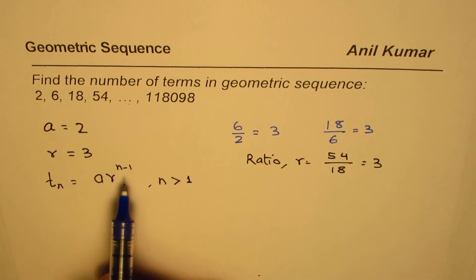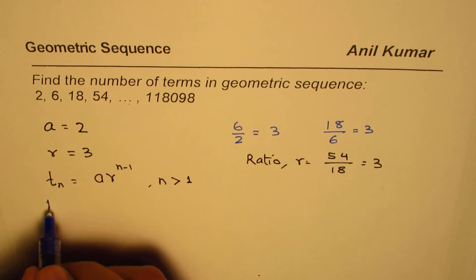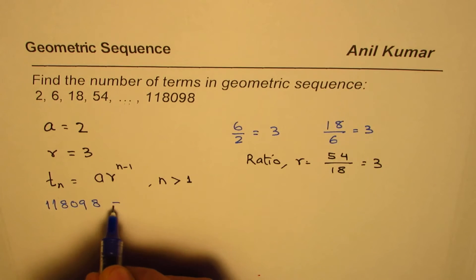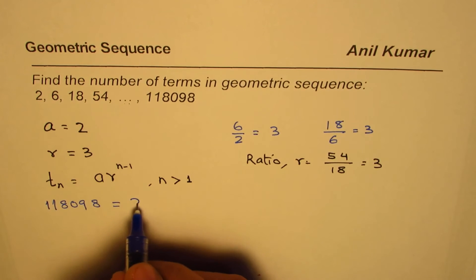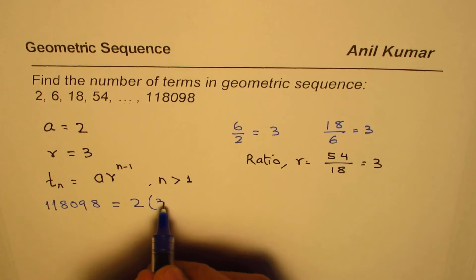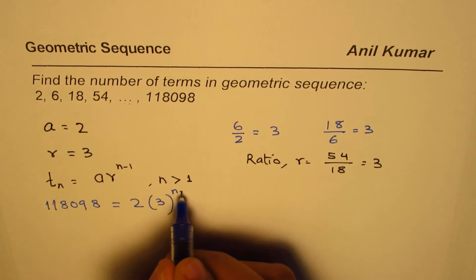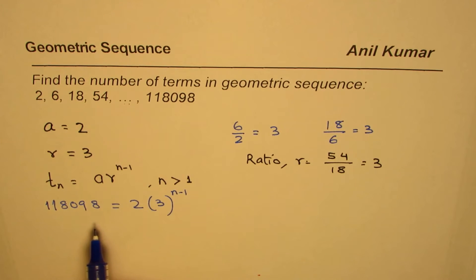We can apply this formula. We know the nth term which is 118098 equals to a is 2 for us, r is 3 for us, and this is n minus 1. Now to solve this equation we can divide by 2.